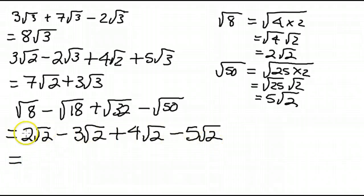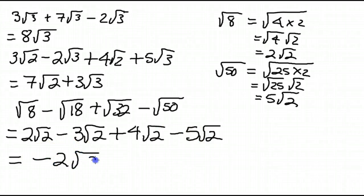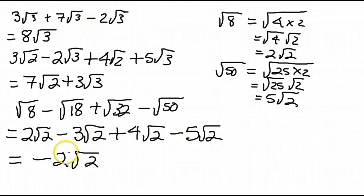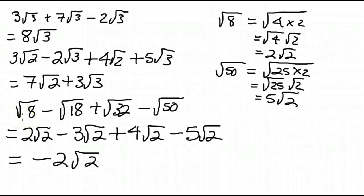Now they are all like terms. So we have 2 minus 3 is negative 1, plus 4 would be positive 3, minus 5, which gives negative 2 root 2. Another way: 2 plus 4 gives positive 6 root 2, minus 8 root 2 — 6 minus 8 is negative 2, giving us negative 2 root 2. So what we need to be prepared to do is express entire radicals as mixed radicals and then collect like terms.